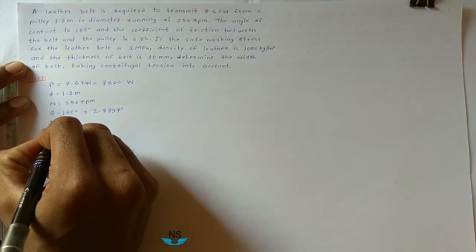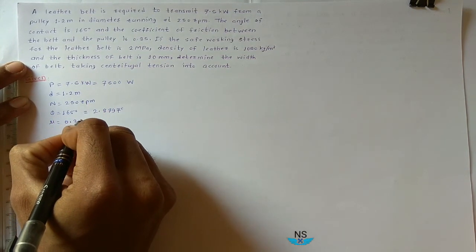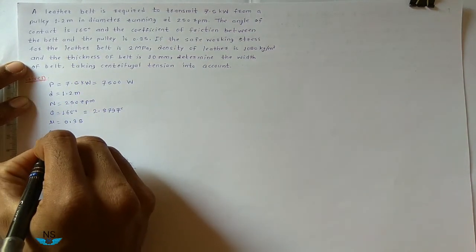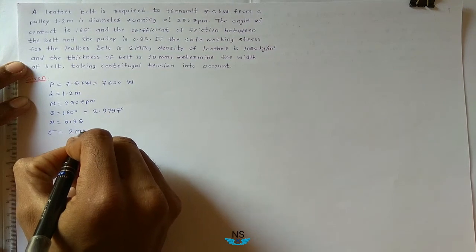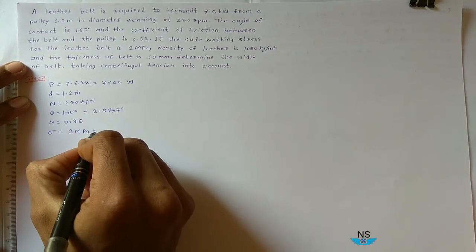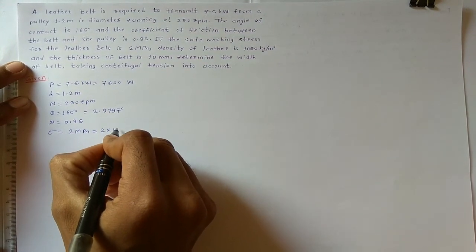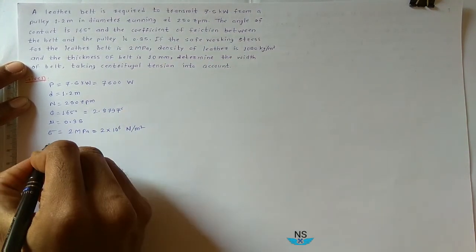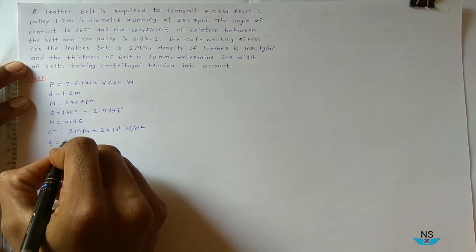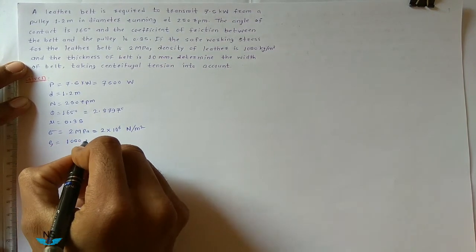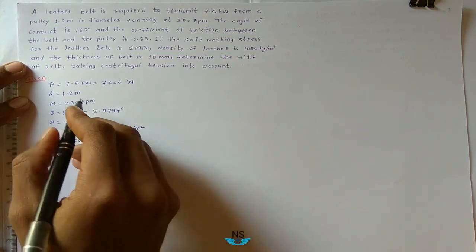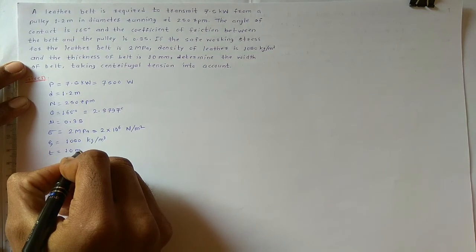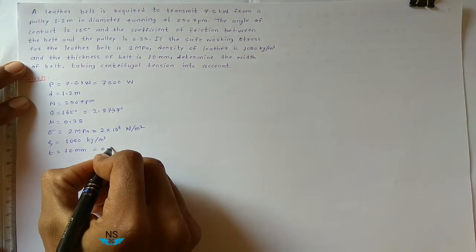Coefficient of friction mu is equal to 0.35. The safe working stress sigma is equal to 2 MPa, that is 2 times 10 raised to 6 N per meter square. Density of belt rho is equal to 1050 kg per meter cube, and the thickness of belt t is equal to 10 mm, that is 0.01 meter.